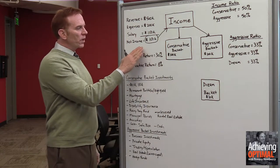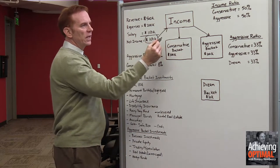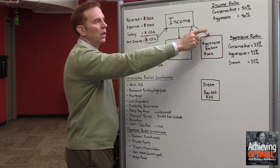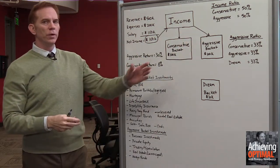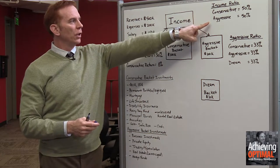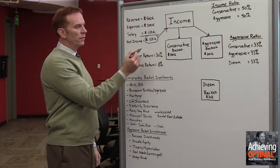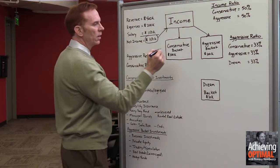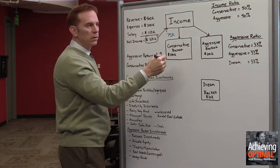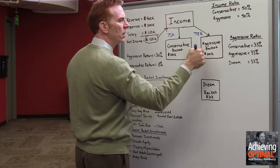So we have this net income of $150,000, and basically we are going to take that $150,000 and divide it by a predetermined income ratio. Our income ratio is: the conservative bucket is going to get 50% of our income, and our aggressive bucket is going to get 50% of our income. So that means with $150,000 in net income, we are going to move $75,000 to the conservative bucket and $75,000 to the aggressive bucket.